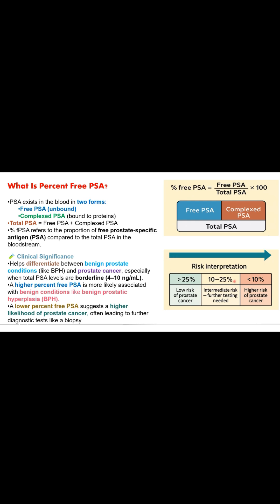How to interpret the results? If the value is more than 25%, there is low risk of prostate cancer. If it is between 10 to 25%, there is intermediate risk and further testing is required. And if it is less than 10%, there is a very high risk of prostate cancer and we should go for prostatic biopsy. This is all about percent free PSA. Thanks for watching.